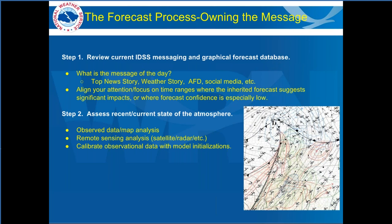Step two is where the forecast process really begins — assessing the current state of the atmosphere using the full suite of tools, techniques, and knowledge available. This should include interrogation of observed data, model-derived analyses, hand analysis, surface and upper air observations, and the full suite of remote sensing data including radar and GOES-16 satellite data. Once you have a full picture of the current state, begin to calibrate that 3D conceptual model with model initialization — especially vital for the first 24 hours.